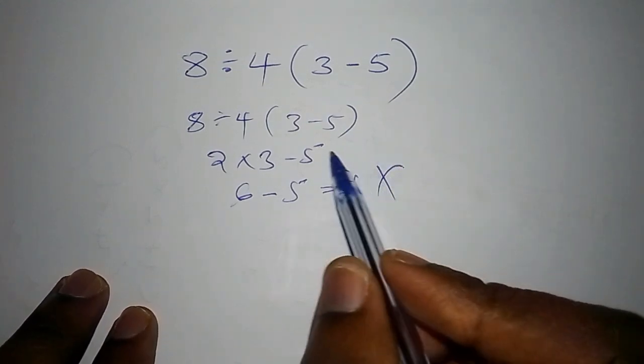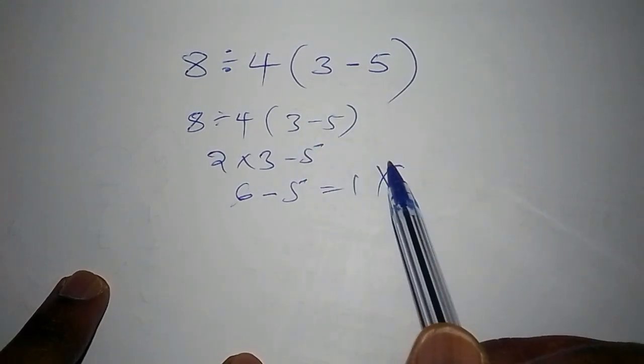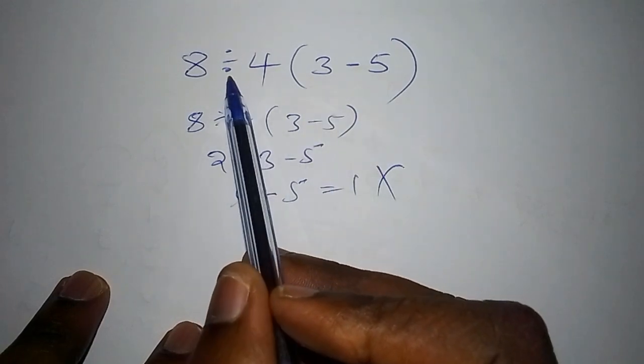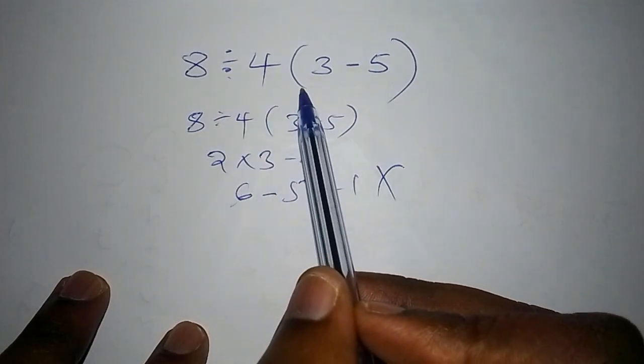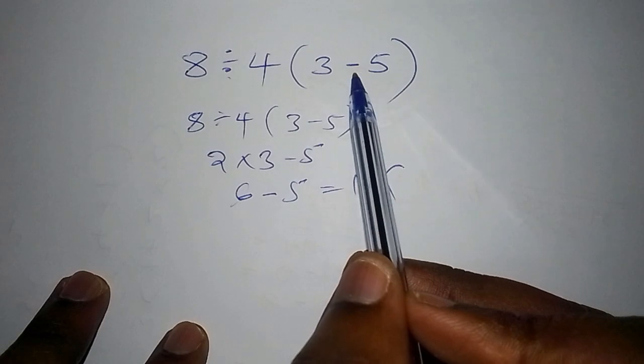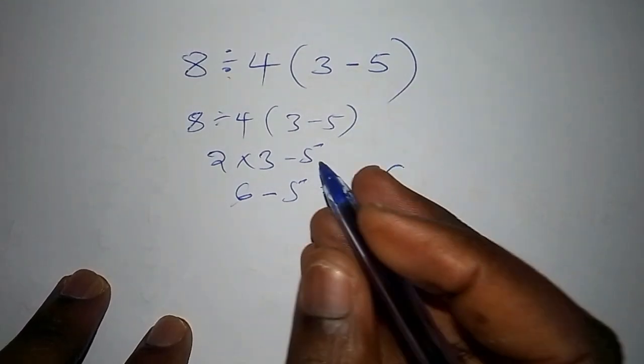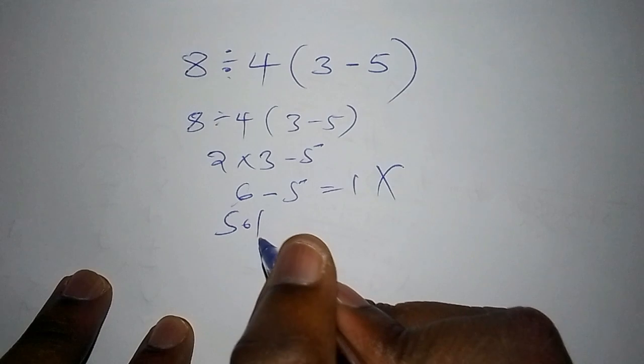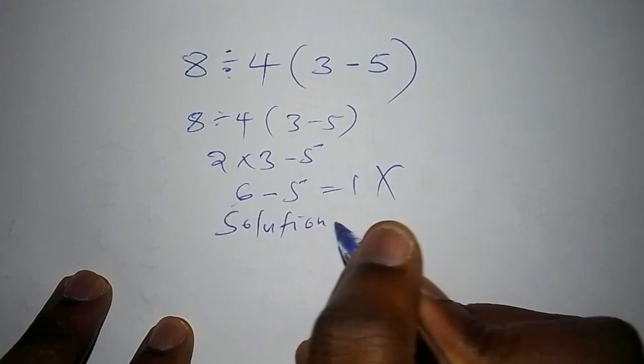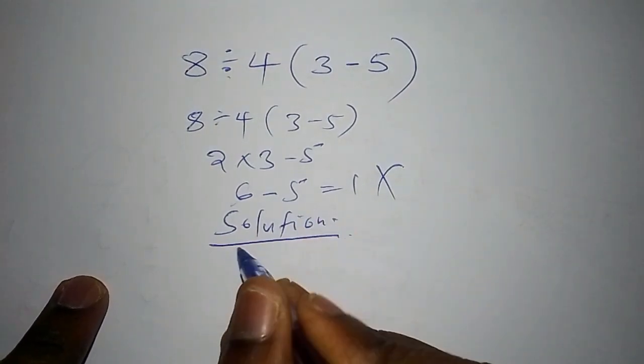I want to lead to the correct method of working out this math problem. Since it has different operations—the division sign, the bracket sign, and the subtraction sign—come with me to the end. Let's start with the solution.